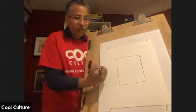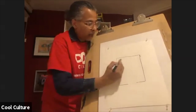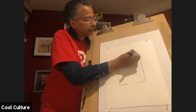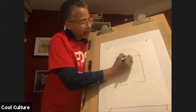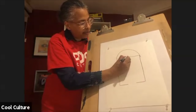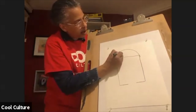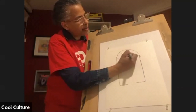Next, you want to create a semicircle above your rectangle. This is going to be our window. Find a center point on this horizontal line, and then you're going to draw diagonal lines to that point.